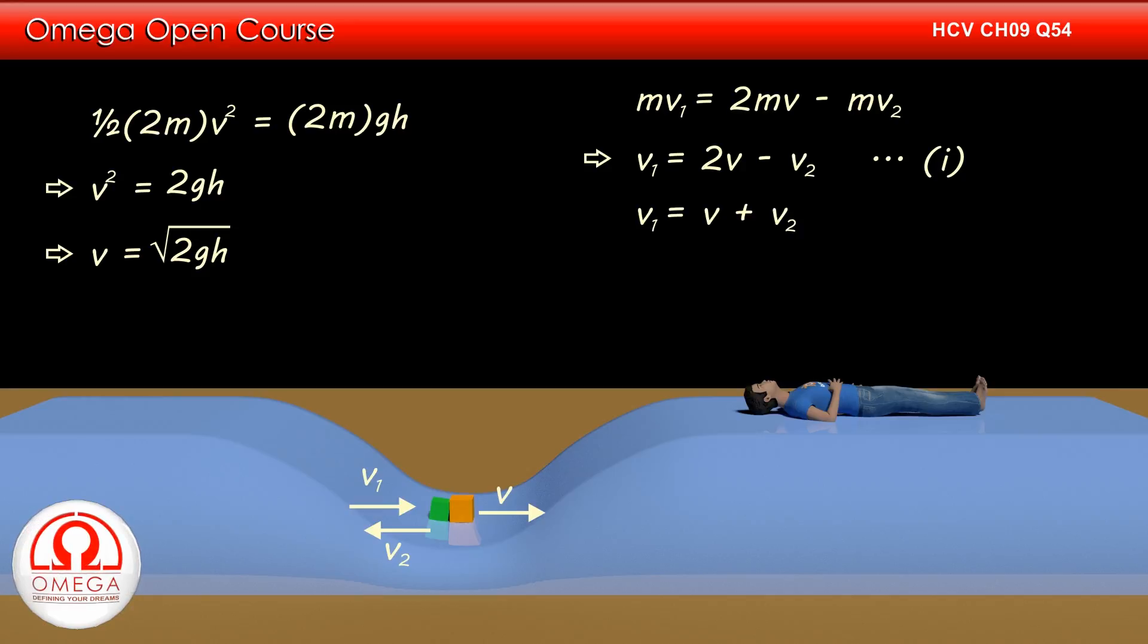Also, as the collision between the blocks is perfectly elastic, the approach and separation speeds must be equal, or v₁ = v + v₂. Solving equations 1 and 2, we get v₁ = 3v/2.